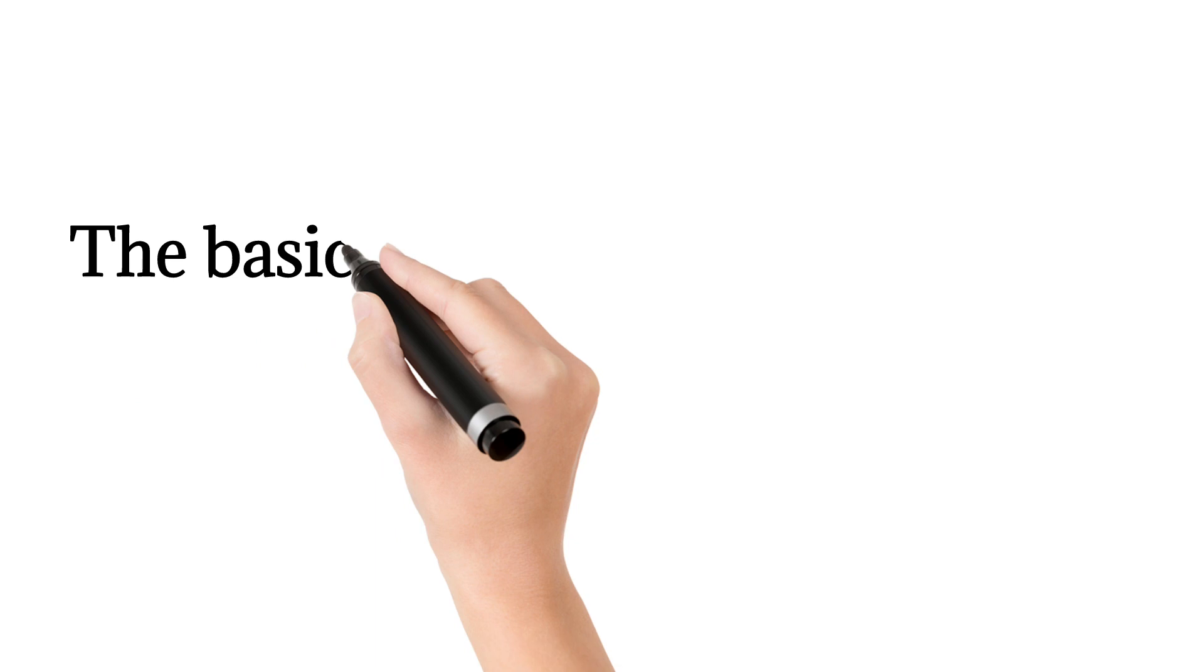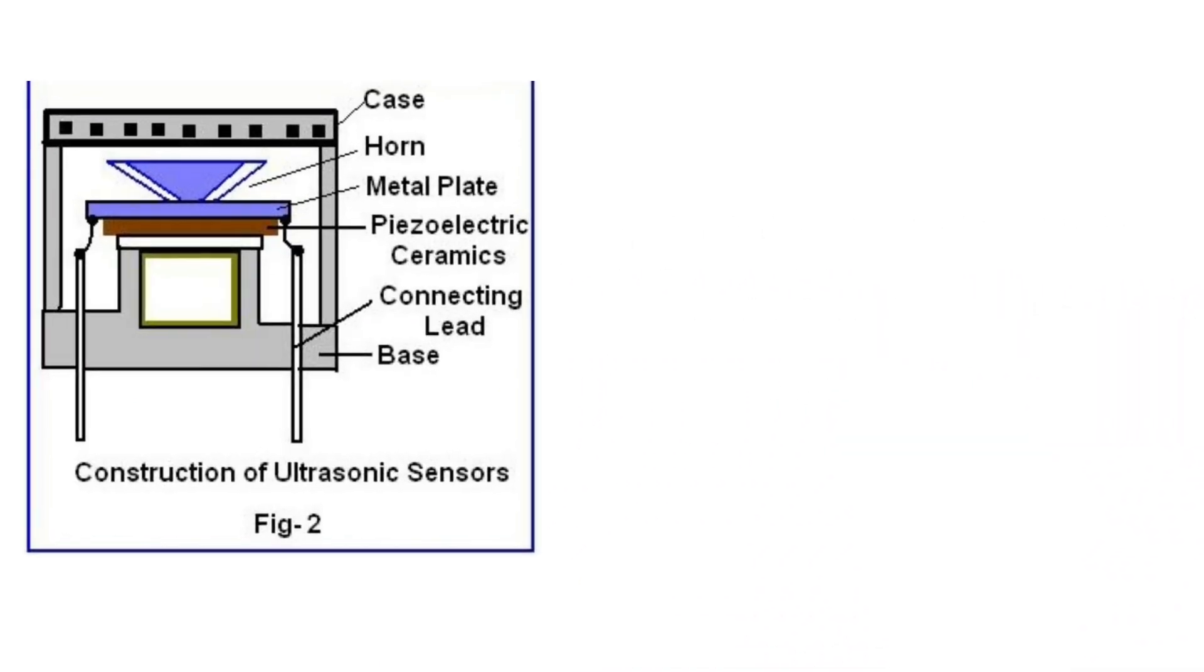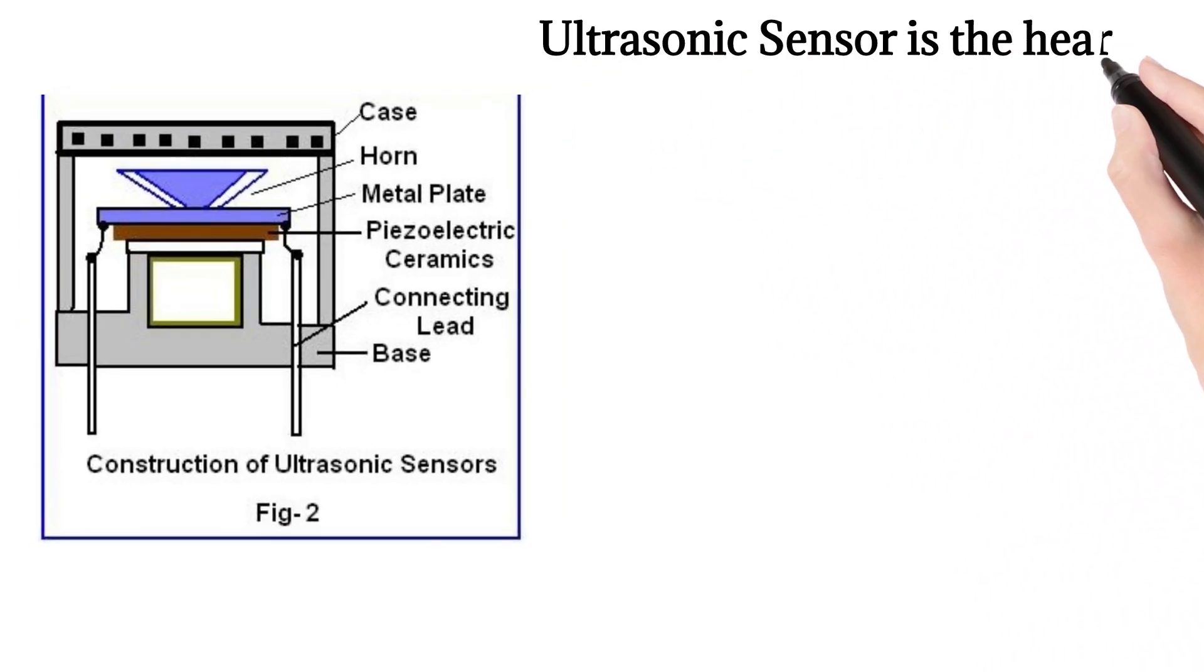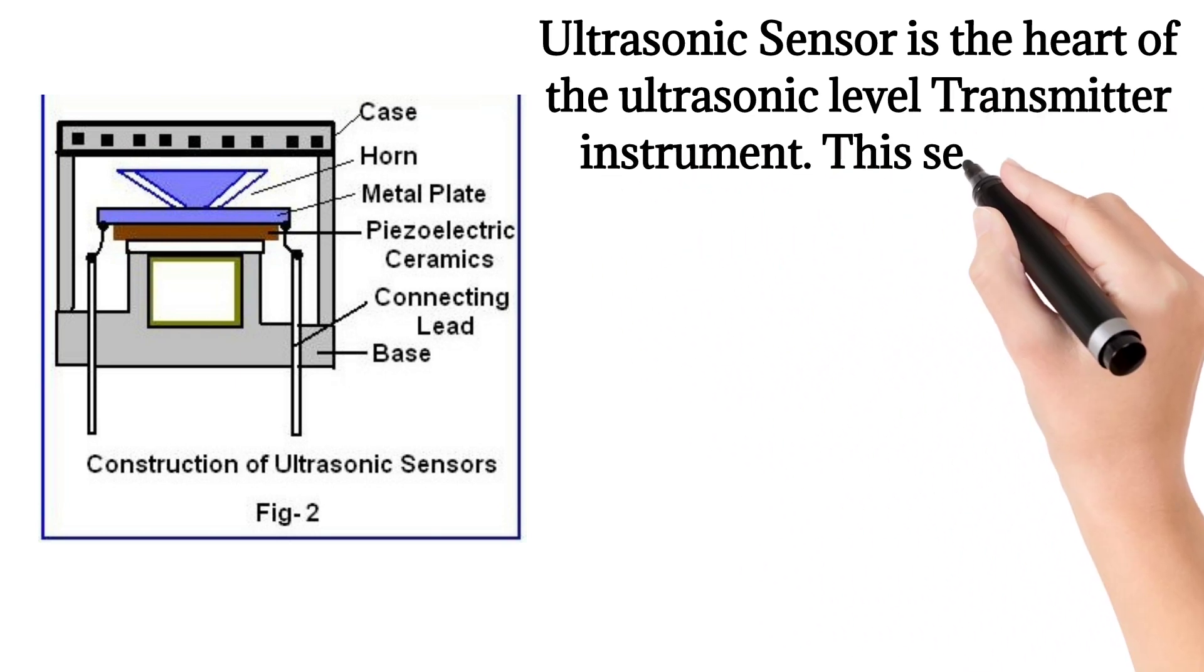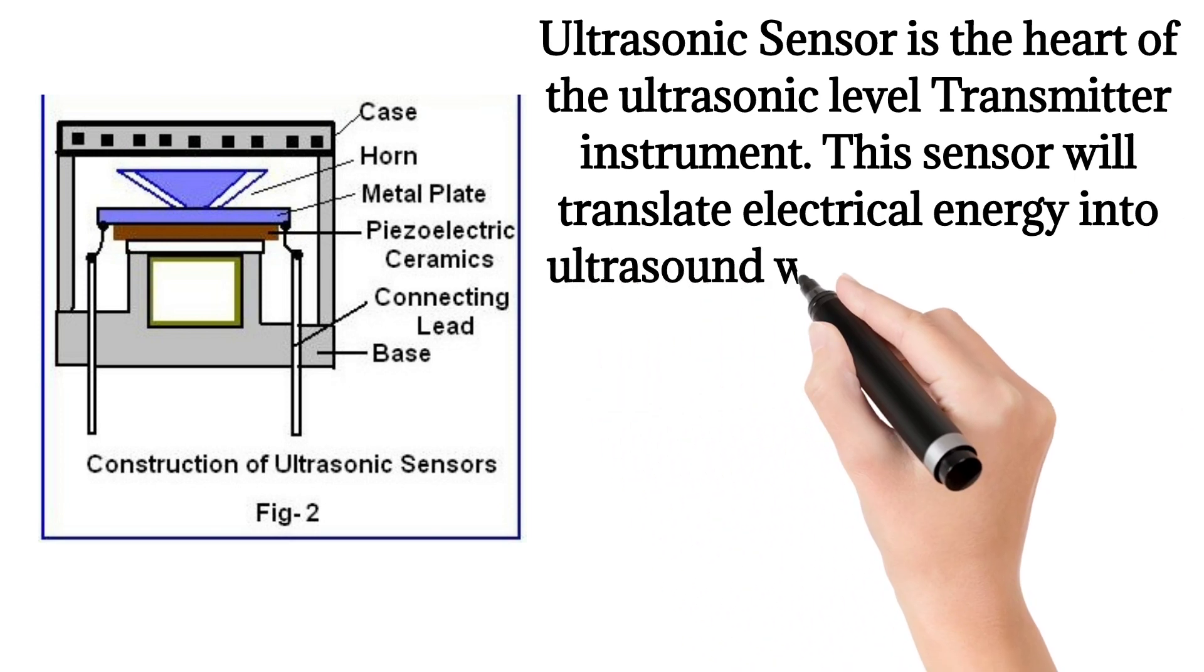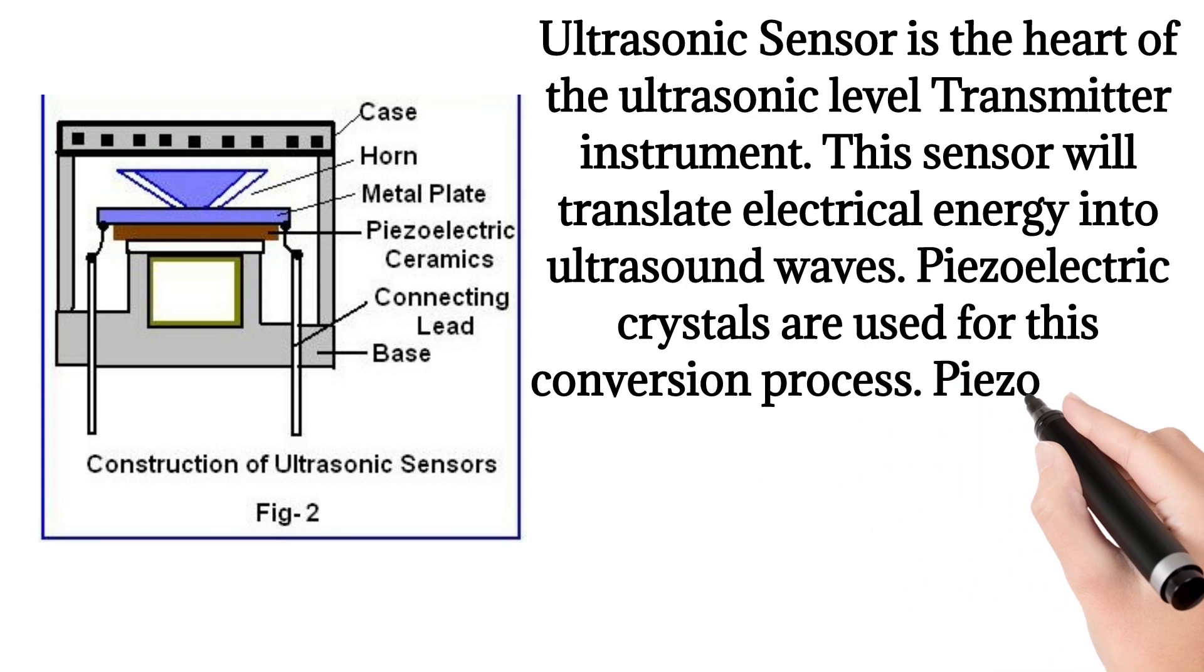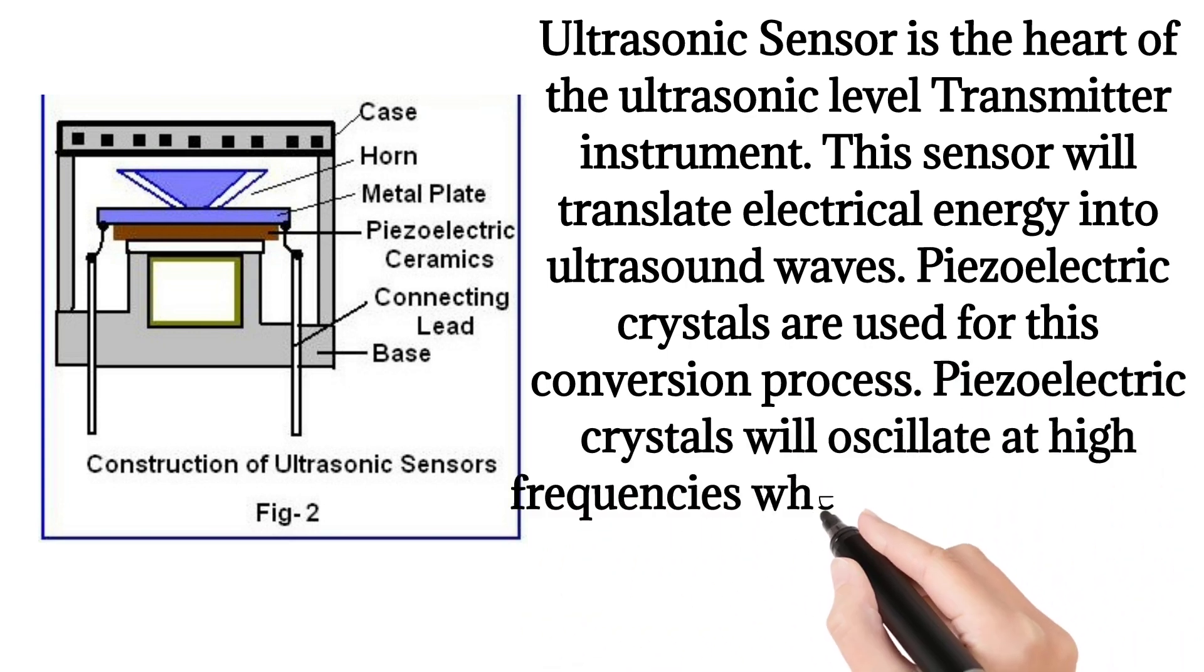The basic structure of an ultrasonic transducer: Ultrasonic sensor is the heart of the ultrasonic level transmitter instrument. This sensor will translate electrical energy into ultrasound waves. Piezoelectric crystals are used for this conversion process. Piezoelectric crystals will oscillate at high frequencies when electric energy is applied to them. The reverse is also true.